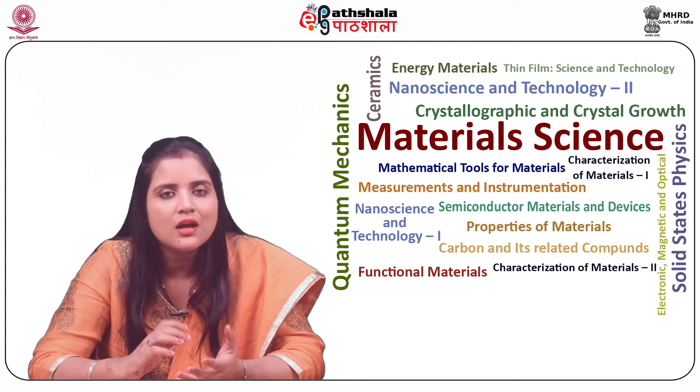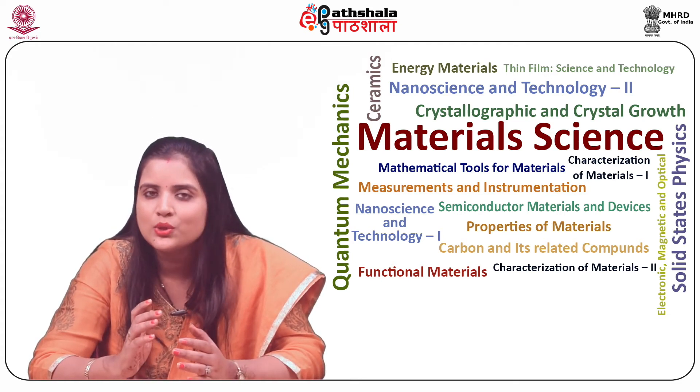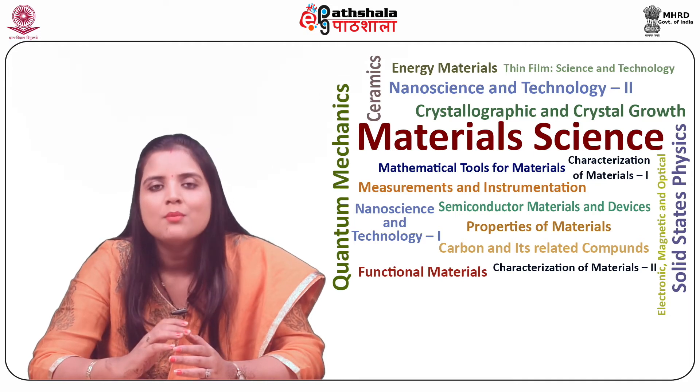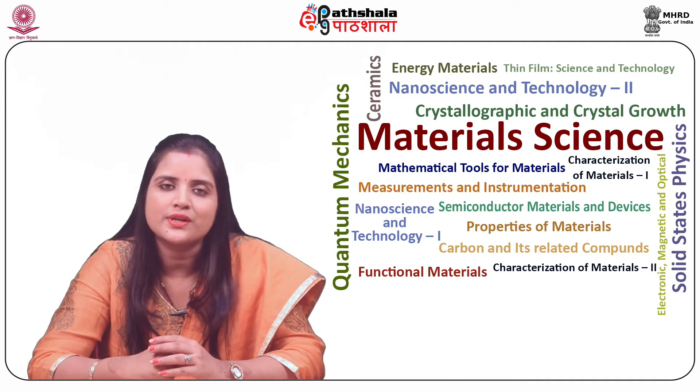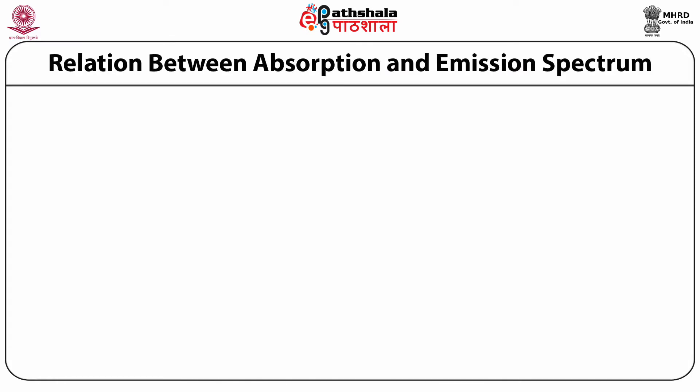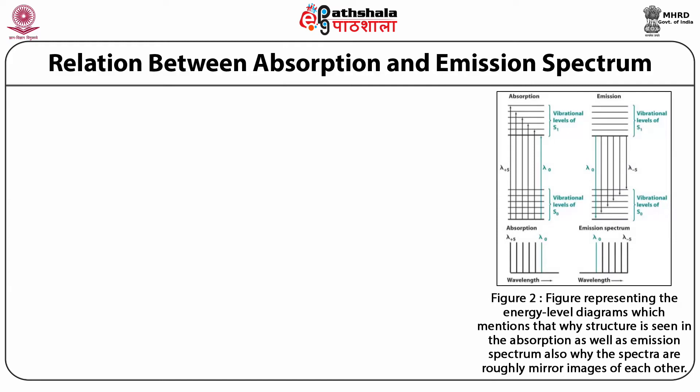Phosphorescence phenomena occur rarely when compared to fluorescence, as the molecule in its triplet state has a greater chance of experiencing inter-system crossing to a lower energy state before the occurrence of phosphorescence. We will now describe the relation between absorption and emission spectrum. Figure 2 shows the energy level diagrams which explains the Y structure seen in both the absorption and emission spectrum, and why the spectra are roughly mirror images of each other.